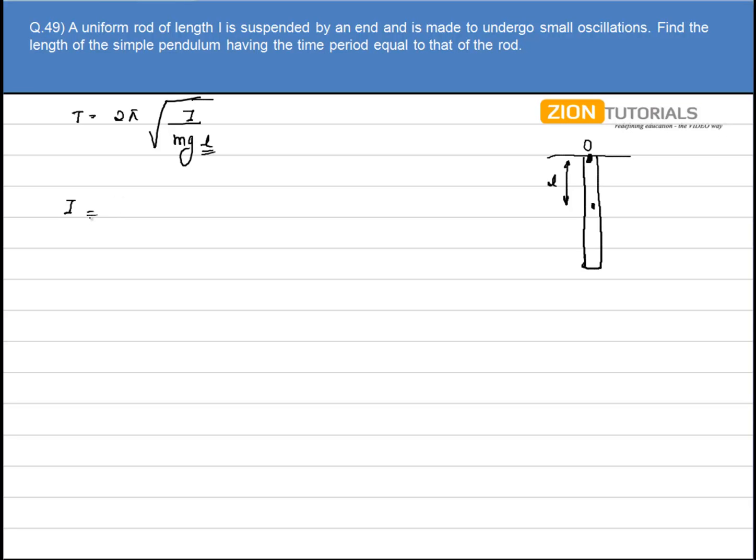So the moment of inertia about O will be equal to moment of inertia about C plus ML². Let's say the total distance is given to me as capital L.